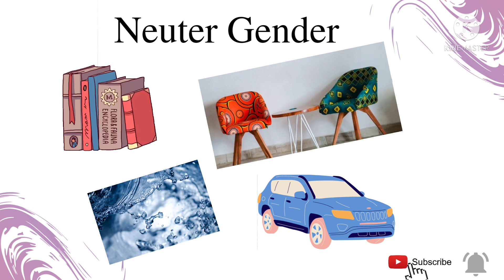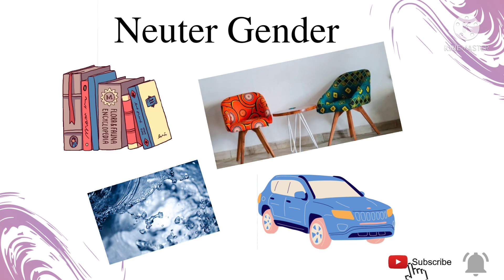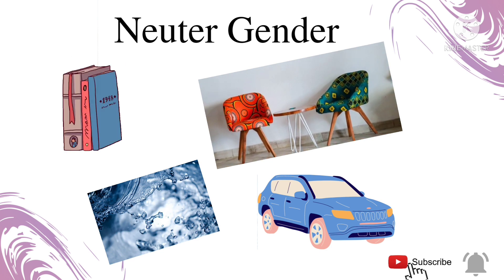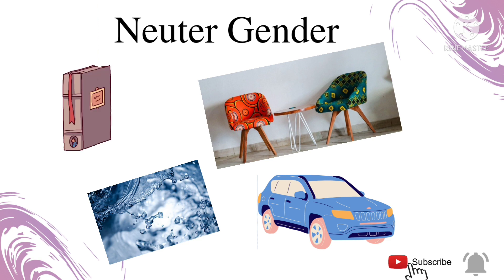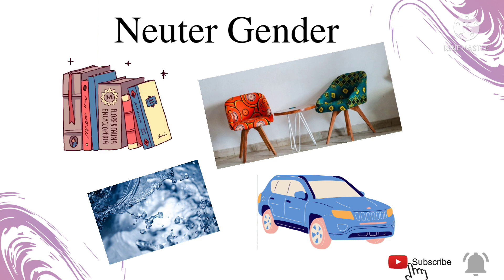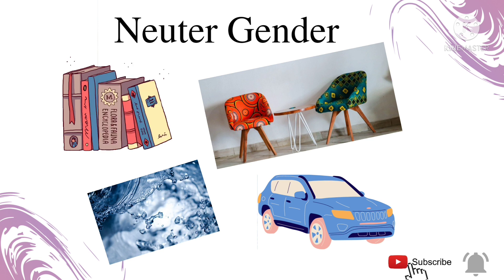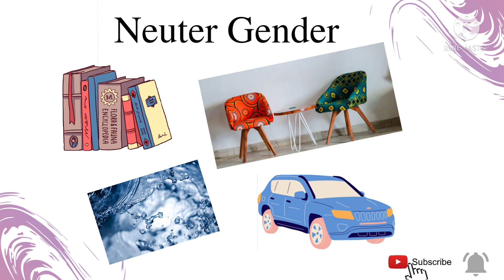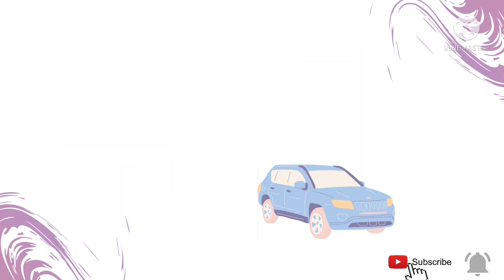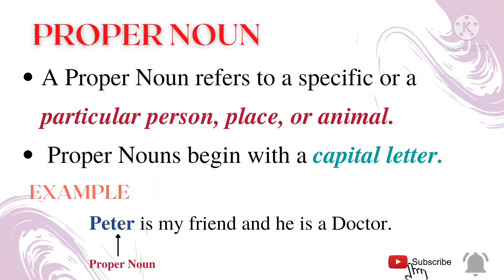Neuter gender: words that are of the neuter gender name objects and abstract nouns. Examples: book, table, chair, car, water, etc. Next comes the proper noun.